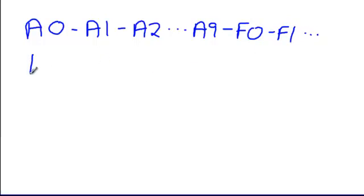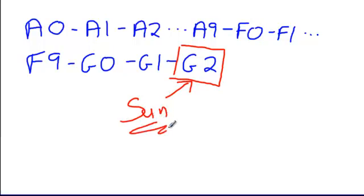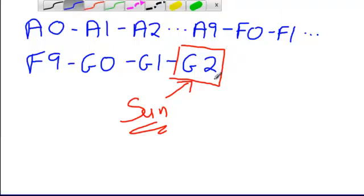And again, then we would have a G0, G1, G2. There's an important one to remember: G2, that's our sun. So that is our sun's spectral class. And then again, we would continue on with this. So that's how we've split it up.